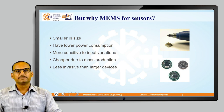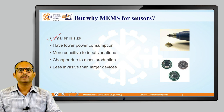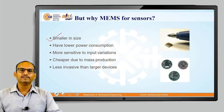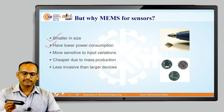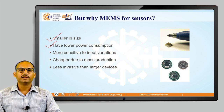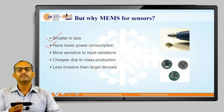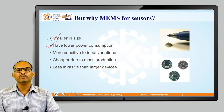Why are we using MEMS sensors? First, they are very small in size - almost 10 raised to minus 6 of a regular sensor. Second, as they are smaller in size, they have lower power consumption. The power consumed is very less, which is why for portable, flying, or miniature systems that require very less power, these sensors are ideal.